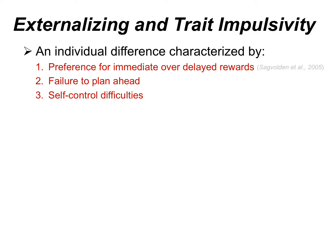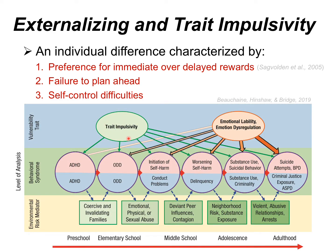To begin, when I talk about externalizing, I'm referring to psychological disorders characterized by high trait impulsivity. Trait impulsivity is an individual difference characterized by a preference for immediate over delayed rewards, failures to plan ahead or consider the consequences of one's actions, and difficulties with self-control or regulating impulses. We also consider emotion dysregulation — essentially how well we can regulate emotions — though we don't observe these directly; instead we observe behavioral syndromes and DSM diagnoses.